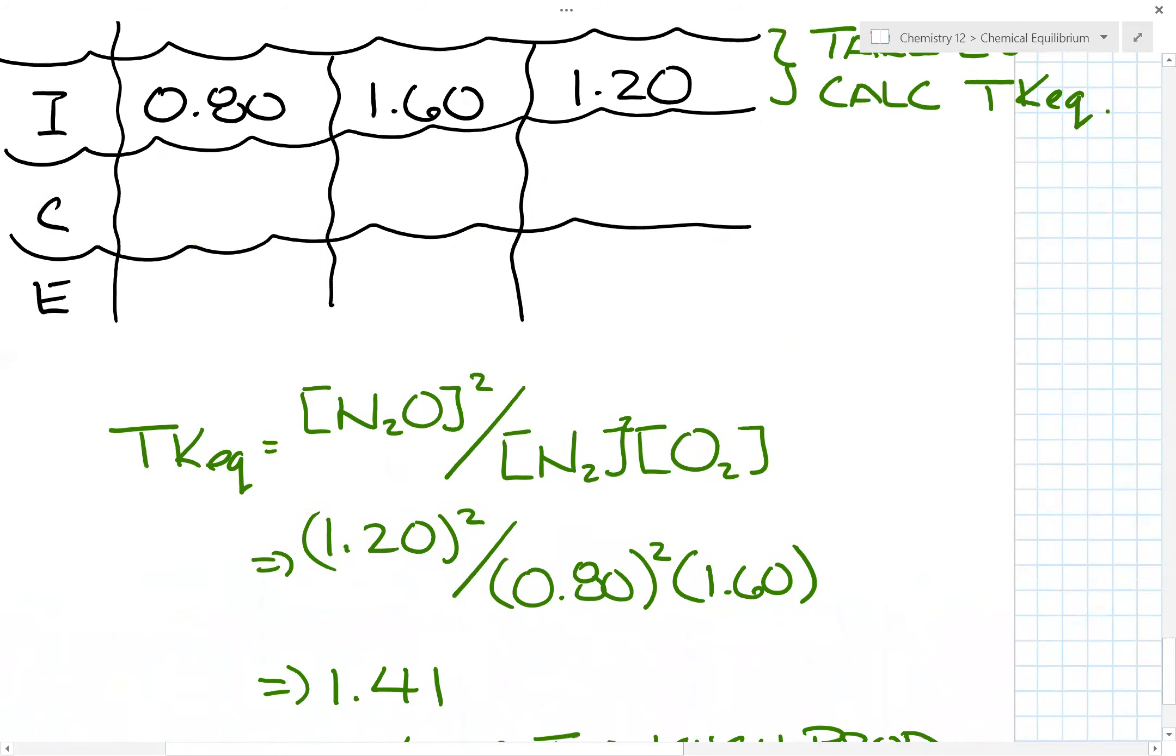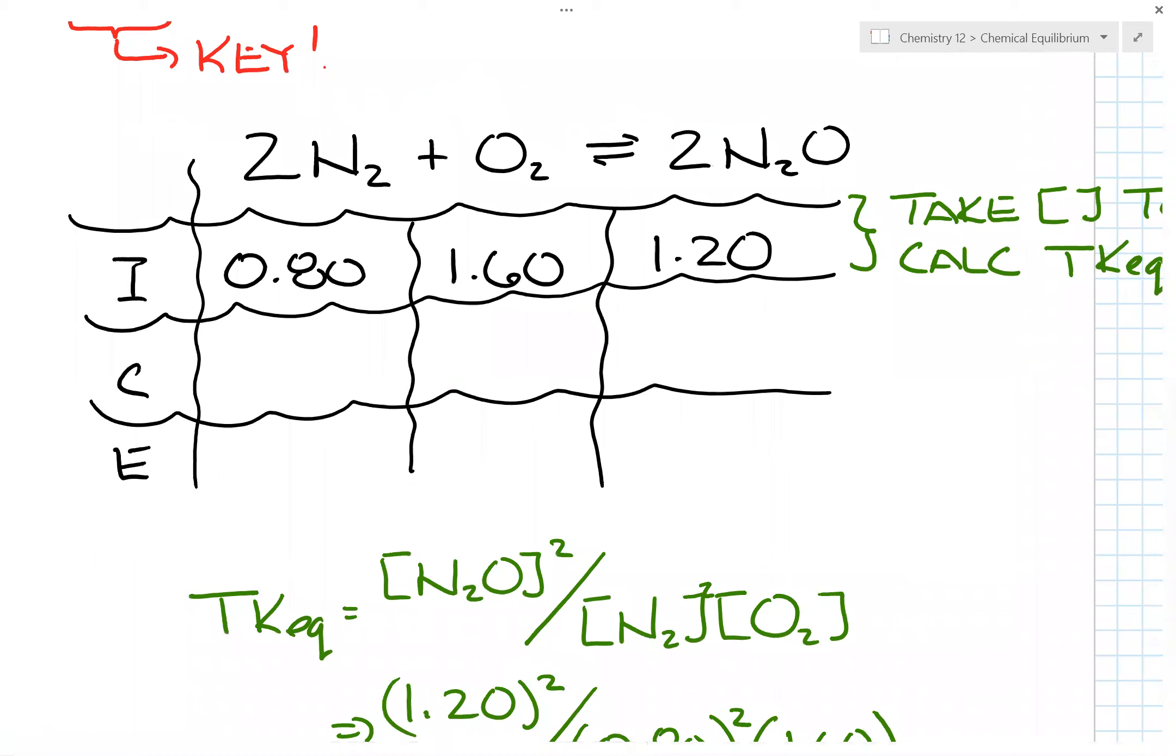So I know this side will go up, this side will go up, this side will go down. How much so? Well, you could say, oh, this could be 2x, this would be x, this would be minus 2x.